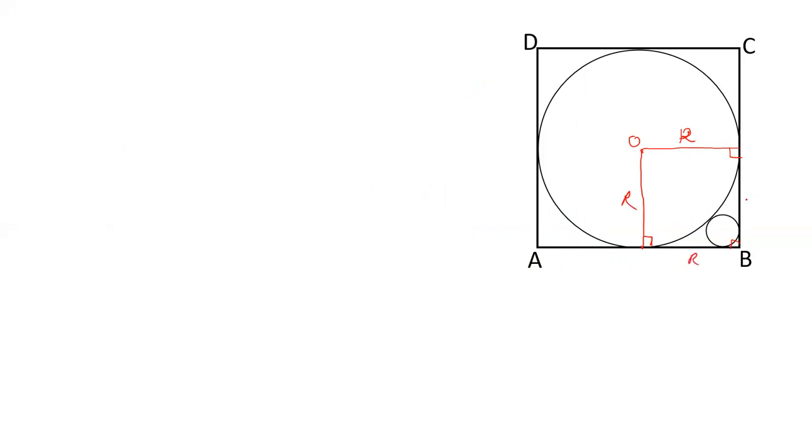So this forms a square. Let's say this is P and this is Q. Therefore, OPBQ is a square of side R.